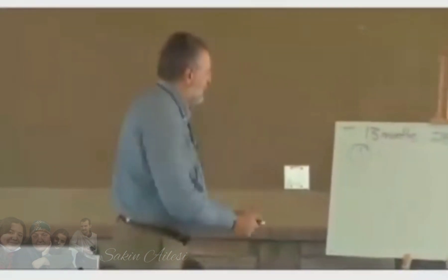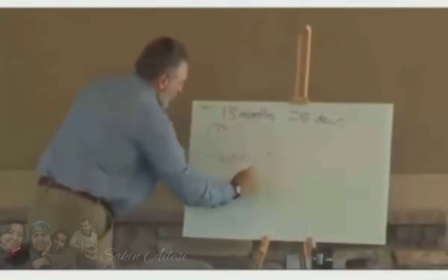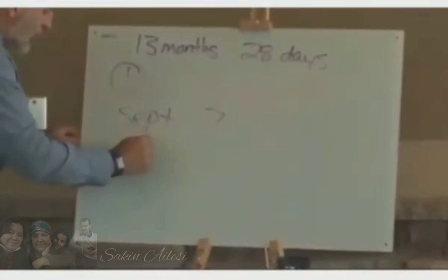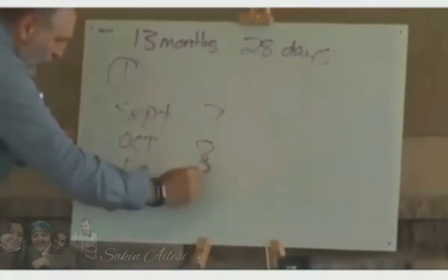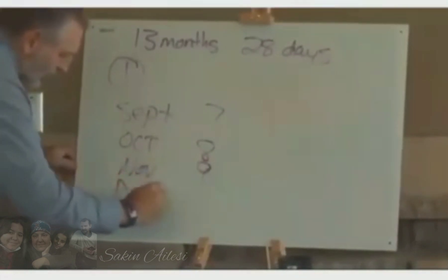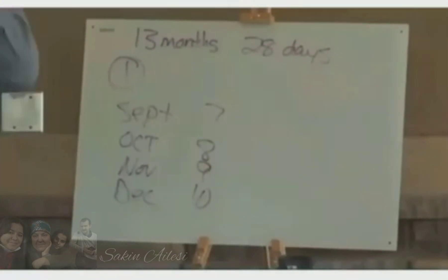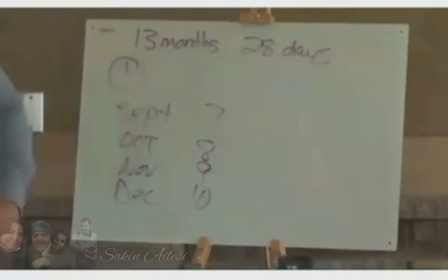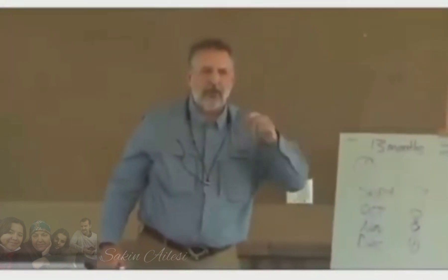What does 'Sept' mean? Seven. I thought that was the ninth month. What does 'Oct' mean? What does 'Nov' mean? What does 'Dec' mean? It's supposed to be the 7th, 8th, 9th, and 10th month. Jan is 11, Feb is 12, March is 13. April is our first month.